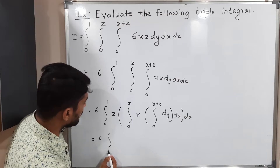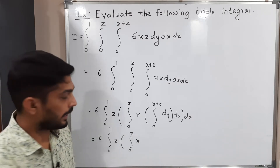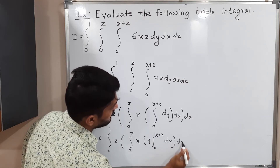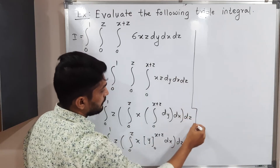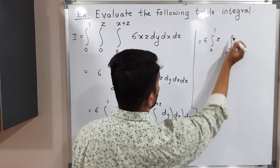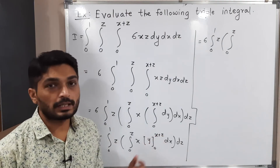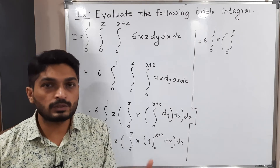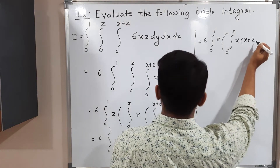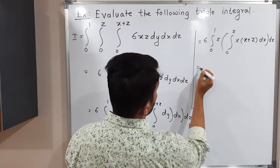This equals 6 integration 0 to 1, z times integration 0 to z, x times — the integration of dy is y — so we write y with limit 0 to x plus z, then dx and dz. Applying the limits: the upper limit gives x plus z, and the lower limit gives 0, so we only need the upper limit. This gives x plus z, with dx and dz remaining.